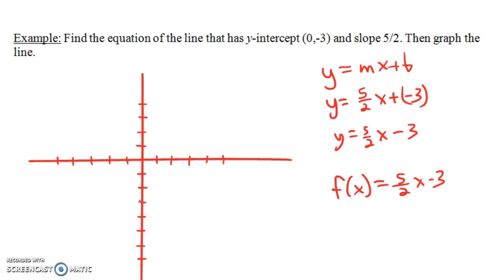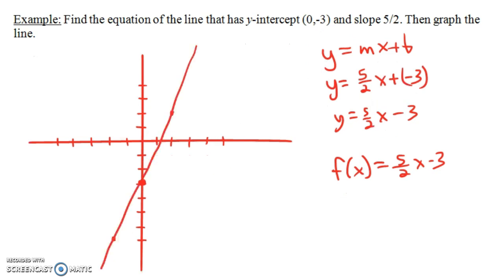What is the graph going to look like? The y-intercept is down here at -3, and the slope is 5/2, so the run is 2. That means we run to the right 2 and then go up 5. Or we could go back to the left 2 and down 5. The line through these points is the graph of y equals 5/2 x minus 3.